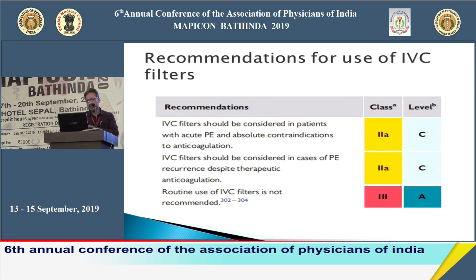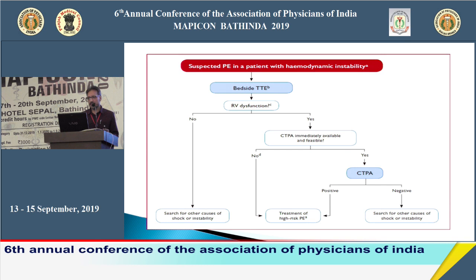For chronic treatment after acute pulmonary embolism, oral anticoagulation must be continued for a minimum of three months. Studies have shown that the risk of recurrence after stopping anticoagulation is the same regardless of whether it was continued for three months, six months, twelve months, or longer. Continuing anticoagulation beyond three months reduces recurrence by 90 percent but increases bleeding risk by approximately three percent per year.